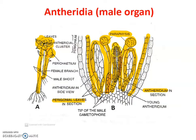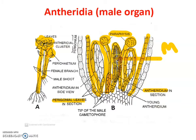In the anthridium there is the development of antherozoids. Antherozoids means male gametes. Male gametes develop in the anthridium. Many antherozoids first form a cell and it is called as anthrocytes. These anthrocytes when released are developed into antherozoids. They are biflagellated sperms, also called as male gametes, and they are formed inside the anthridium. So in the antheridium, male gametes develop called as antherozoids.